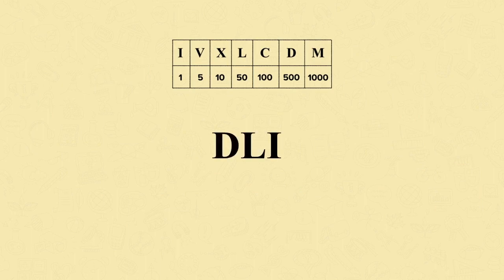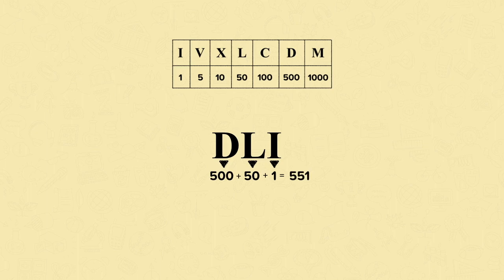Let's look at this set of Roman numerals: D, L, I. So what's the value of these Roman numerals? D represents 500, L 50, and I 1. So to find the value of D, L, I, we need to add them together. 500 add 50 add 1 is 551.